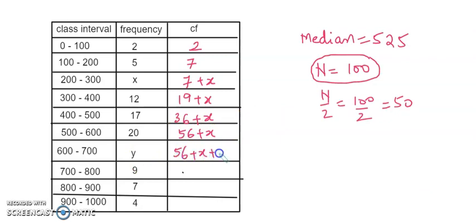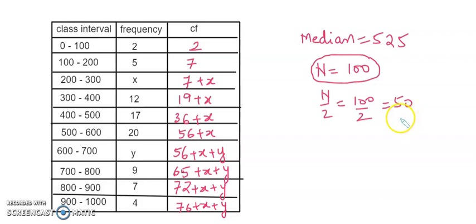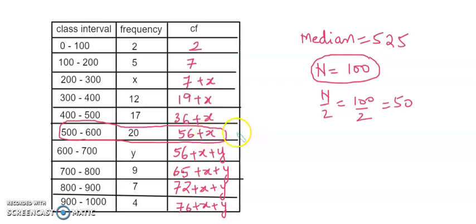Then it is 56 plus x plus y; then 65 plus x plus y; then 72 plus x plus y; and finally 76 plus x plus y. Since n by 2 is 50, we need the nearest and largest CF. We select 56 plus x as the median class because 56 is already nearest and greatest to 50, and 56 plus x will be greater than 50.